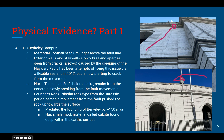Because one plate is slipping one way and the other plate is slipping the other way, part of the stadium is moving south and the other part is moving north. Founders Rock, a boulder found north of campus, has similar rock types from the Jurassic period, and tectonic movement from the fault pushed that rock up to where it is now.